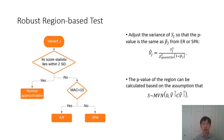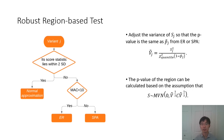Here is the procedure of our robust region-based test. First, we calculate the score statistic for variant j. If this value lies within two standard deviations, we can directly use normal approximation due to computational concerns, since normal approximation behaves well near the mean. If the score statistic lies beyond two standard deviations, we use either efficient resampling or SPA based on the minor allele count of this variant. After that, we adjust the variance of S_j so that the p-value is exactly the same as p_j calculated from efficient resampling or SPA. Finally, the p-value of the region is calculated based on the assumption that S follows a multivariate normal distribution.